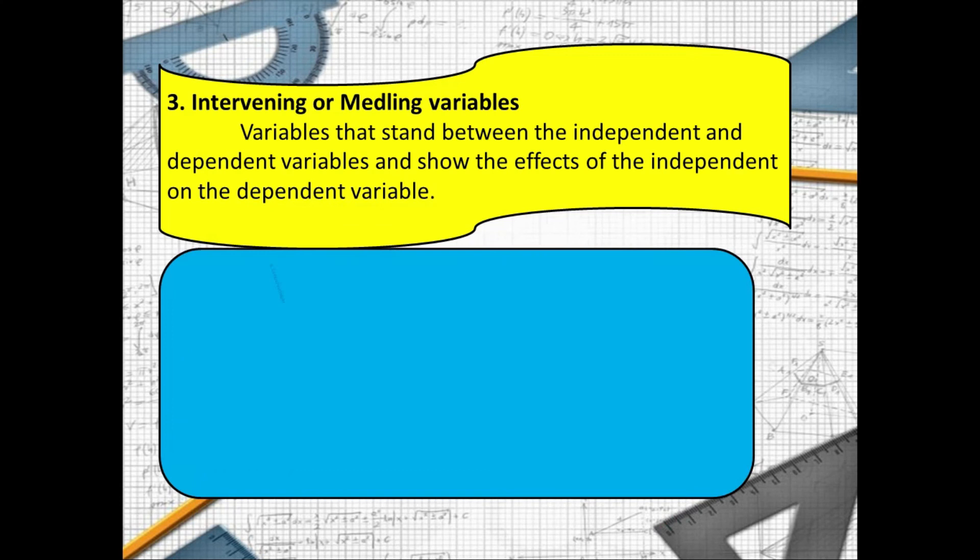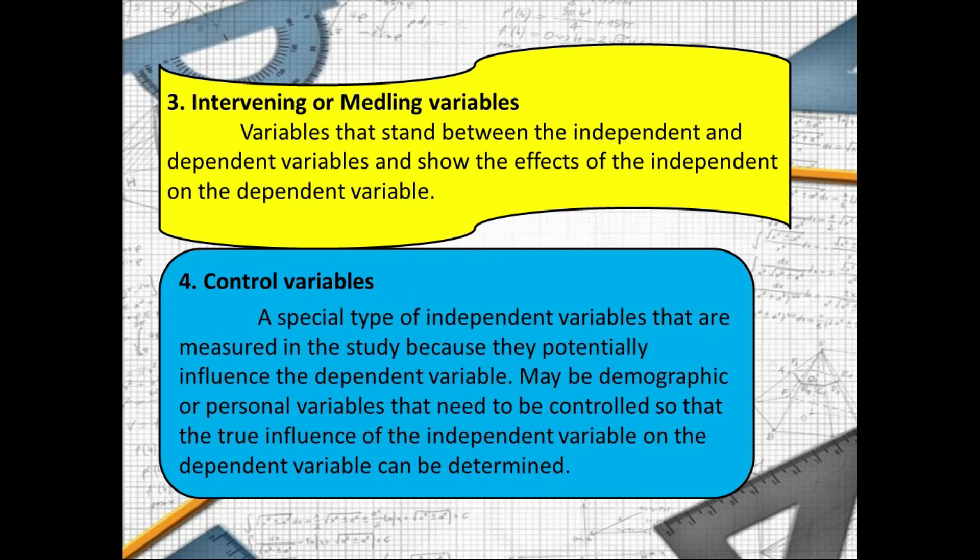Number four: we have the control variables. Control variables is a special type of independent variables that are measured in the study because they potentially influence the dependent variable. Maybe demographic or personal variables that need to be controlled so that the true influence of the independent variable or the dependent variable can be determined.